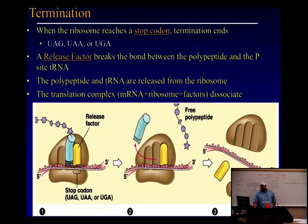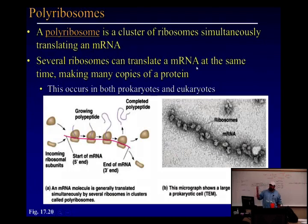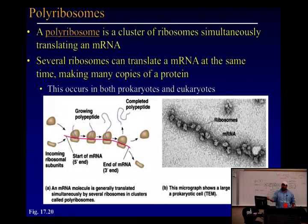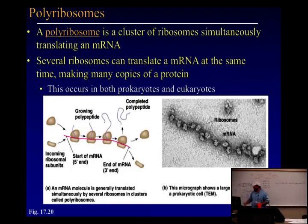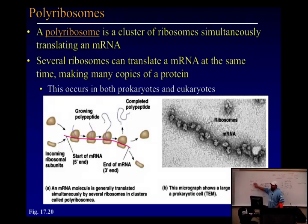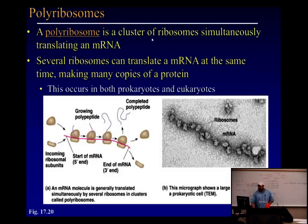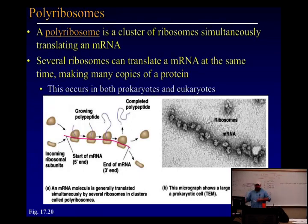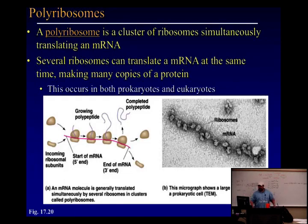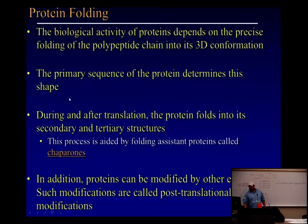An mRNA is like a highway — just as multiple cars can be on the highway simultaneously, multiple ribosomes can load onto the same mRNA one after another, each reading it independently. This results in many protein molecules being made from a single mRNA. This phenomenon is called polyribosomes (poly = many), and it occurs in both prokaryotes and eukaryotes.